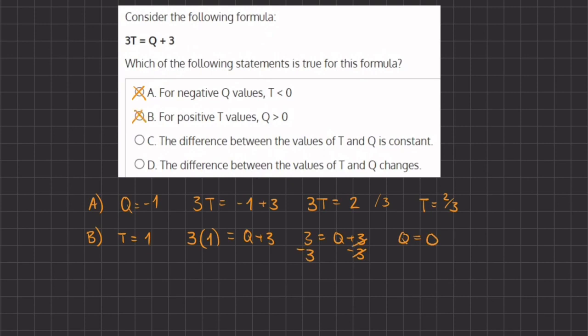Therefore B is incorrect. Now for answers C and D, we have to understand better what the difference between t and q is. It would be easier to understand the difference between q and t instead of t and q because there is a constant in front of the t.